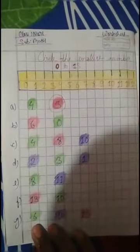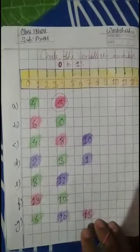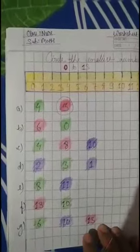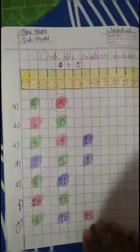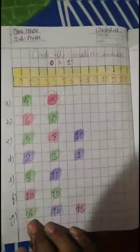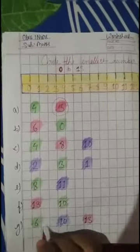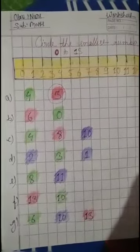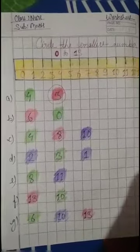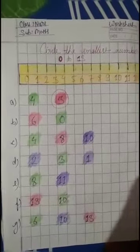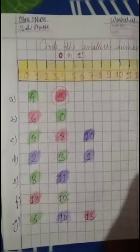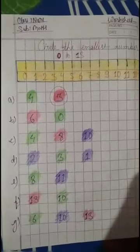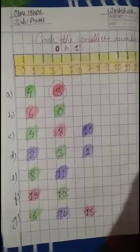And last line mein dekhen ga — 6 hai, 10 aata hai, aur 13. In tino numbers mein sab se smallest number kaun sa hai? Sab se pahle kaun sa number aata hai? 6 aata hai, 10 aata hai, 13 aata hai. Sab se pahle 6 aata hai, so 6 sab se smallest number hoga. So isko circle karna hai. Is tarah se complete karna hai. I hope aap log samajh gaye honge — smallest number ko kis tarah se circle karna hai, kaun sa smallest number hota hai. Jo sab se pahle aata hai woh smallest hota hai. So keep practicing and keep learning.